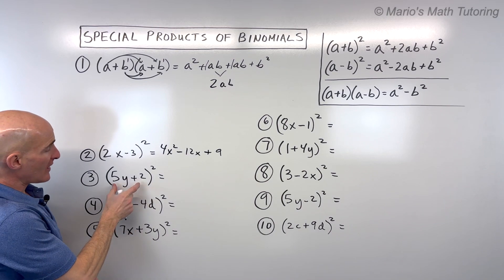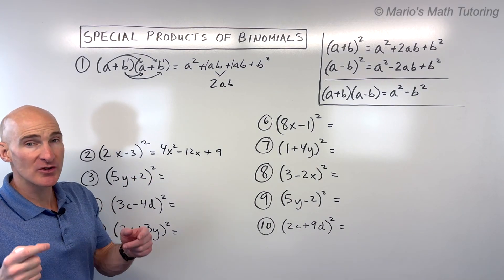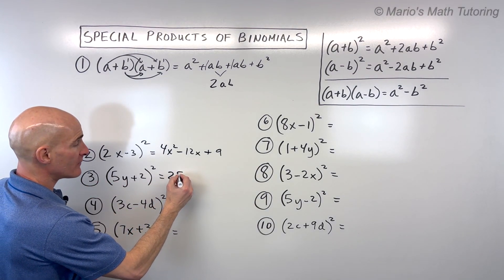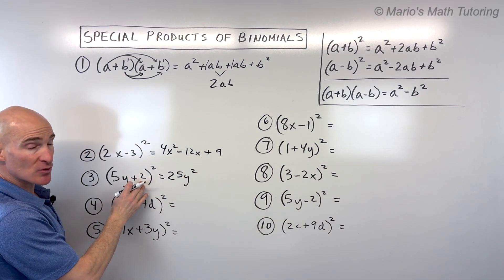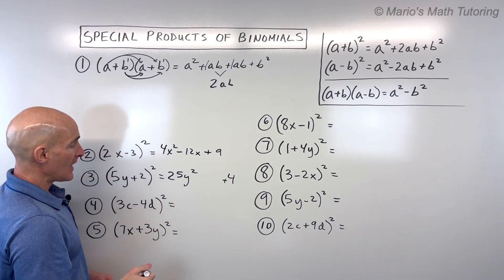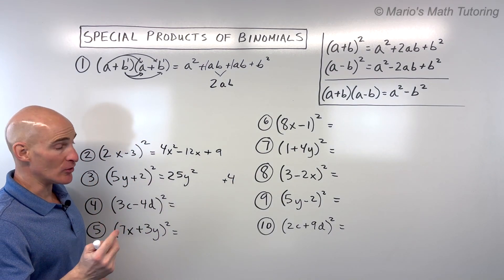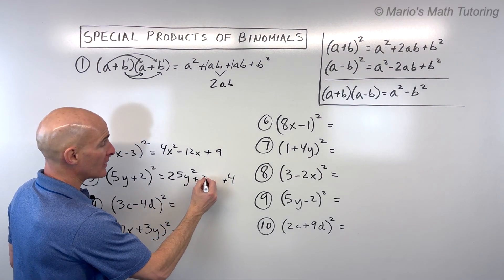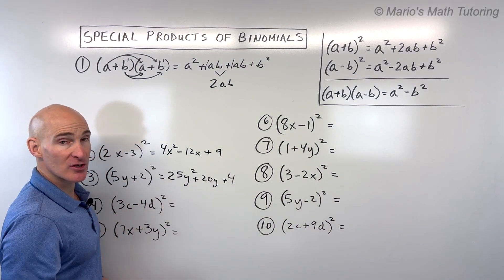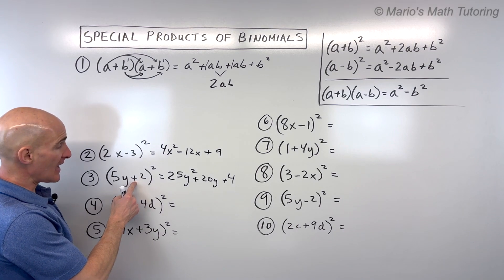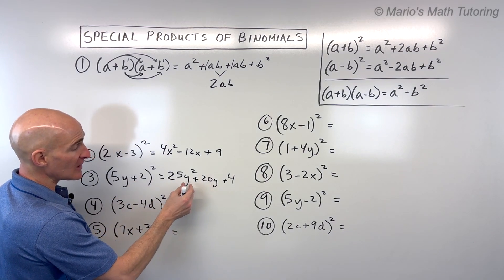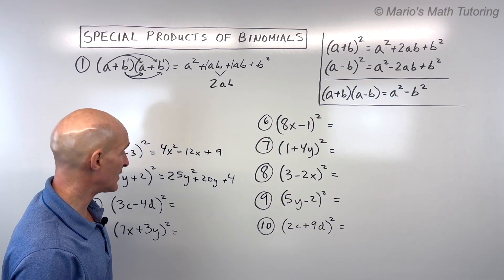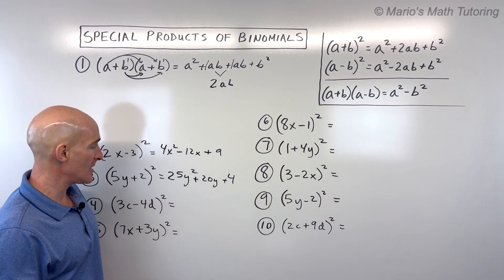For number three, 5y plus 2, quantity squared: 5y times 5y is 25y squared. The last term squared: 2 times 2 is positive 4. Then a times b times 2: 5y times 2 is 10y, doubled is 20y. Remember, if both terms are positive, all terms will be positive. If there's a negative in between, the middle term will be negative, but the first and last will always be positive.